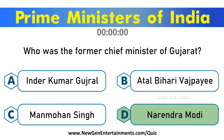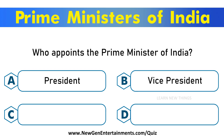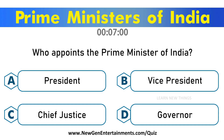Who appoints the Prime Minister of India? Options are A. President, B. Vice President, C. Chief Justice, D. Governor. Answer is Option A. President.